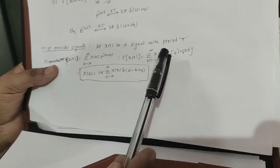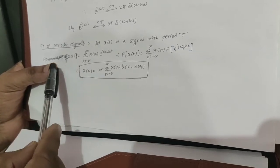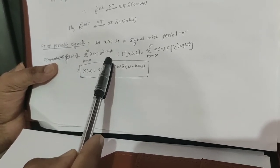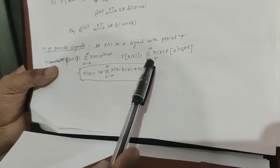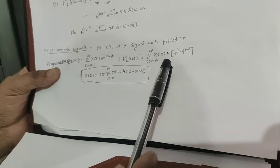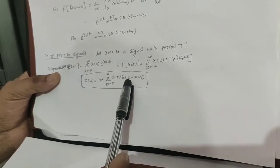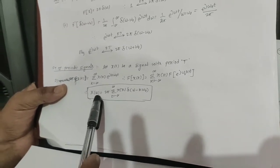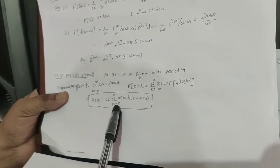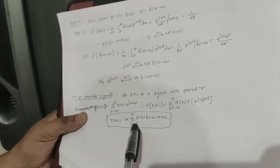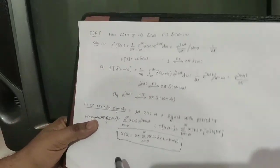Let x(t) be a signal with period T. We can write the Fourier series representation as x(t) = Σ (k = −∞ to +∞) X[k] e^(jkω₀t). Therefore, the Fourier transform of x(t) is the sum over k of X[k] times the Fourier transform of e^(jkω₀t), which gives X(ω) = 2π Σ (k = −∞ to +∞) X[k] δ(ω − kω₀). This formula is used to find the Fourier transform of a periodic signal.